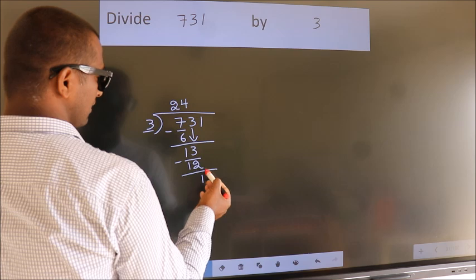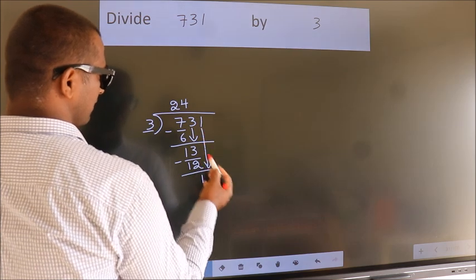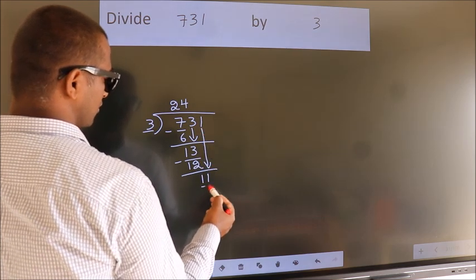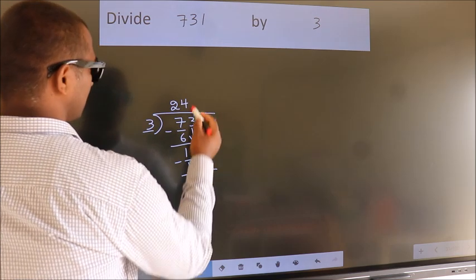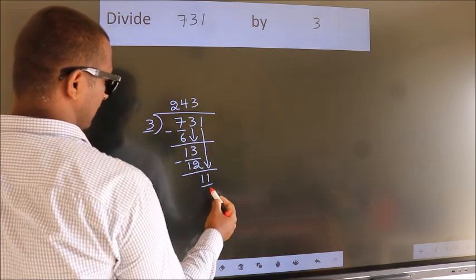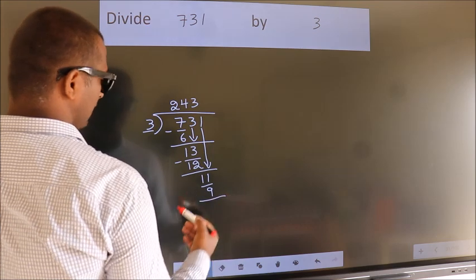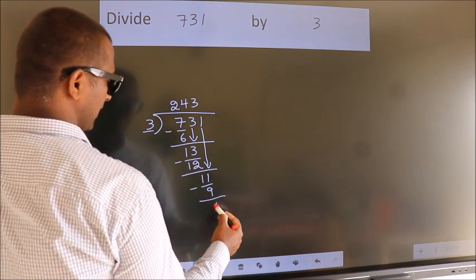After this, bring down the beside number. So 1 down. So 11. A number close to 11 in 3 table is 3 3's 9. Now we subtract. We get 2.